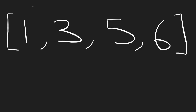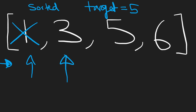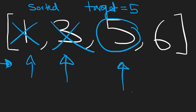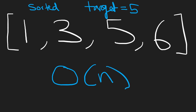Now your first thought might be: well, since the input is sorted and we're given a target value, can't we just go left to right and search the array starting at index 0? Is this equal to 5? Nope. Is this equal to 5? Nope. Is this equal to 5? It is. So we return index 2. This is actually easier than you'd expect — it's the easiest solution. It's O(n), we didn't need any extra memory. This is a pretty good solution.